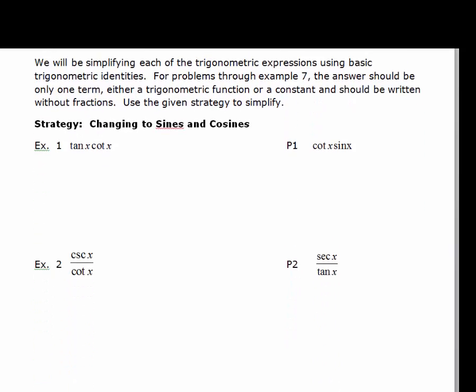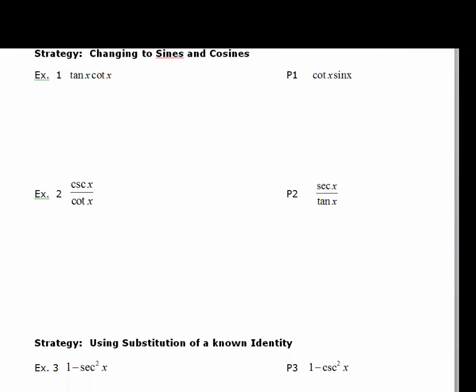We'll start with example one. One strategy — and there are a few different strategies we can use — is to change everything in terms of sines and cosines. We've got tangent x times cotangent x. We can write tan x as sine x over cosine x, and cotan x as cosine x over sine x. The sine x's cancel and the cosine x's cancel, replacing all of those with 1. So our answer is 1.